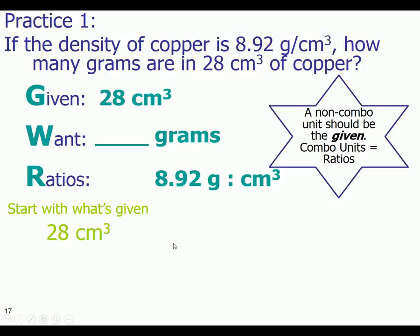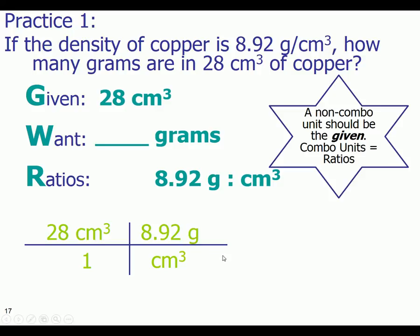Now we can start the problem the same way we always have with the given over one. I'm going to use this unit of the cubic centimeter to cancel out diagonally. So here's my cubic centimeter. I'm going to cancel out diagonally and I'll put the 8.92 grams in the numerator.